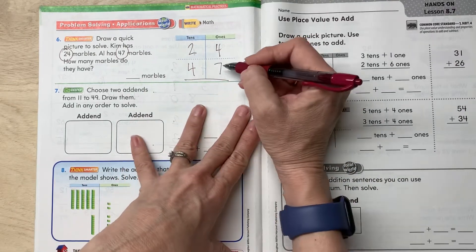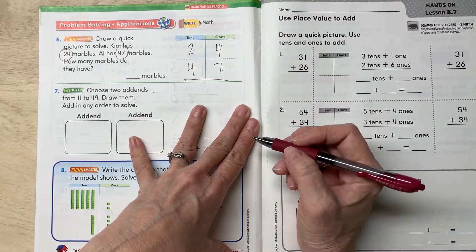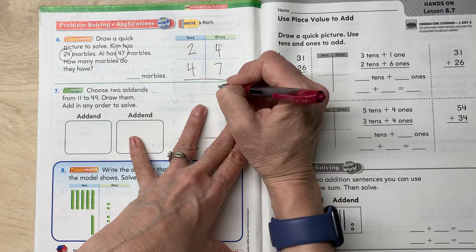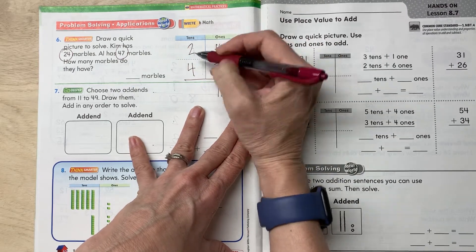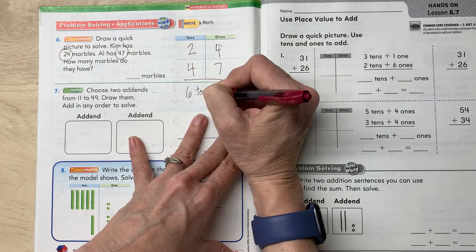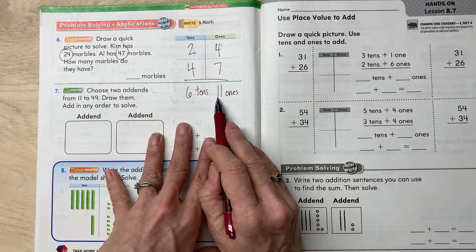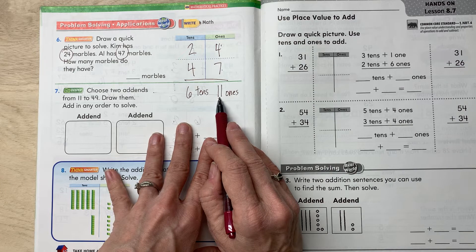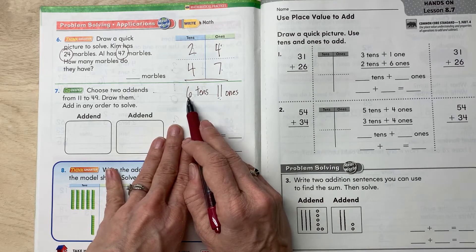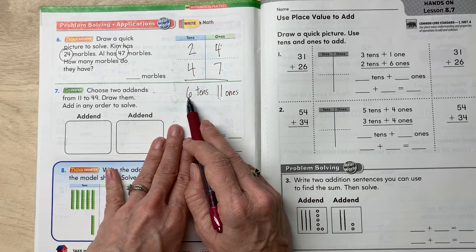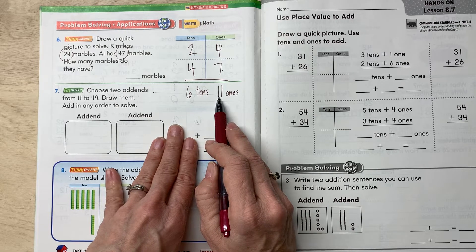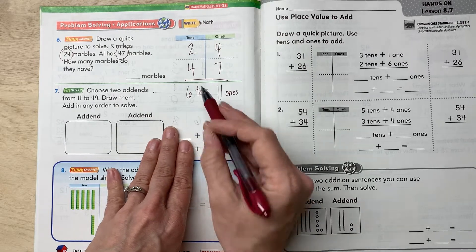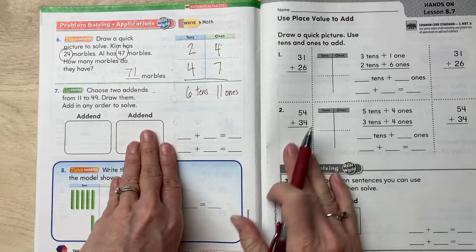All right, so we're gonna end up with seven plus four, which is 11. So we have 11 ones. And two and four is six tens. All right, so notice we have an extra 10 here. So six tens is 60. And then an extra 10 would be 70. And then one is 71. So 71 marbles.